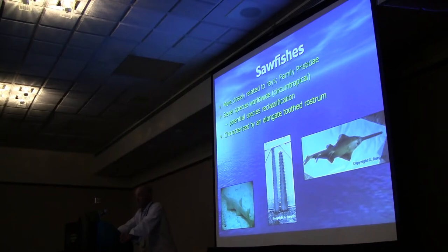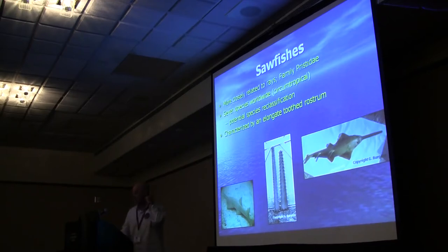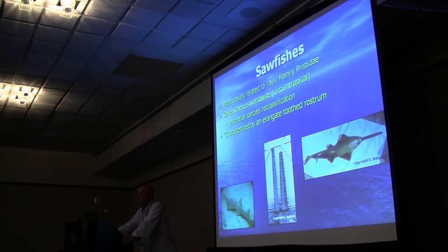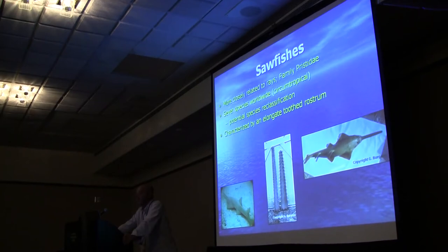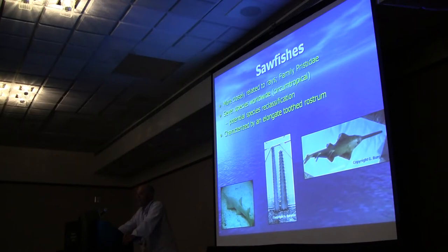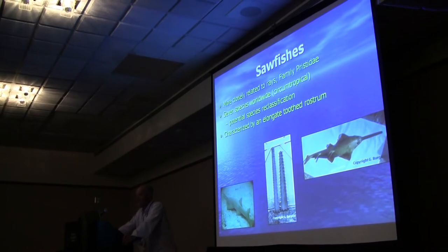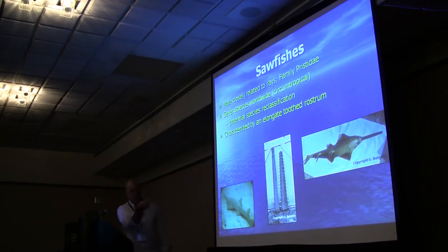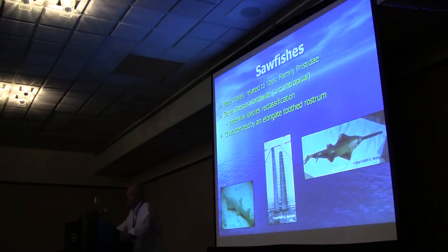Sawfish are actually more closely related to rays. They're in their own family. There are currently seven species worldwide, but there is some potential species reclassification going on. The species is largely found circumtropical. The big thing about sawfish, besides it being a ray-like animal, is it's characterized by this large rostrum, which you can see in this center part here. The rostrum is one of the major diagnostic characteristics used to differentiate species.